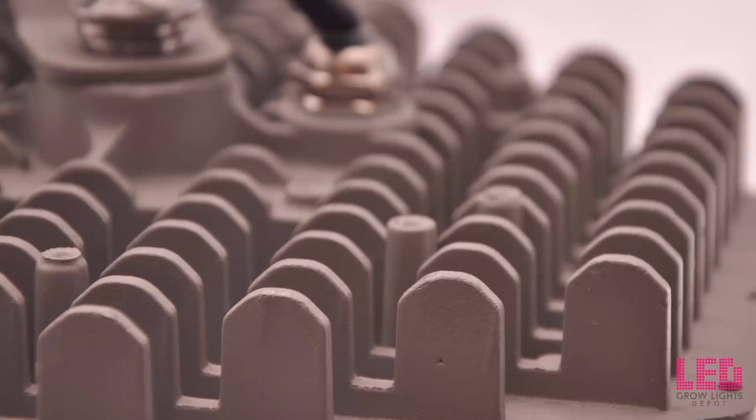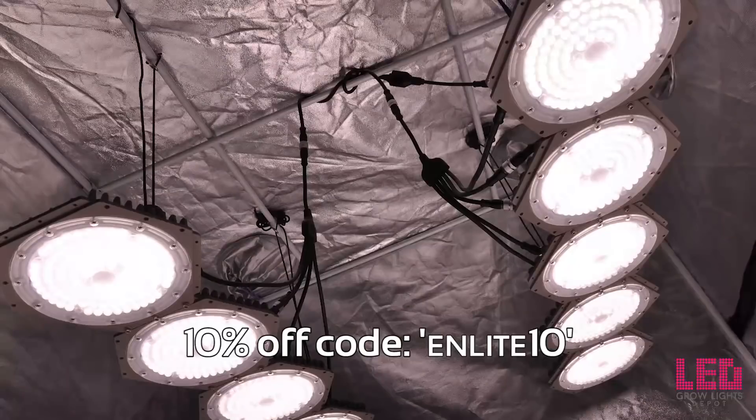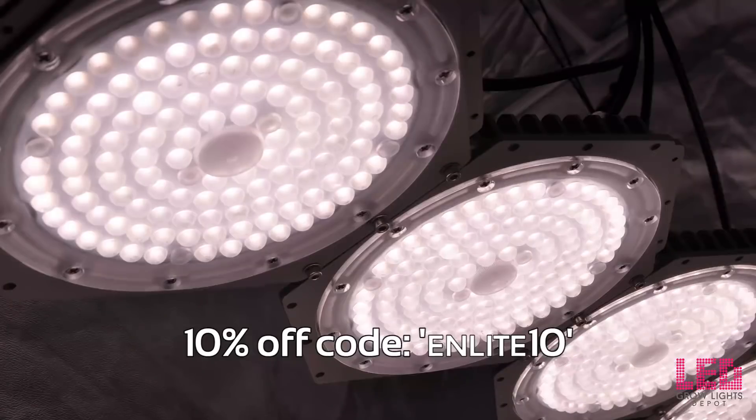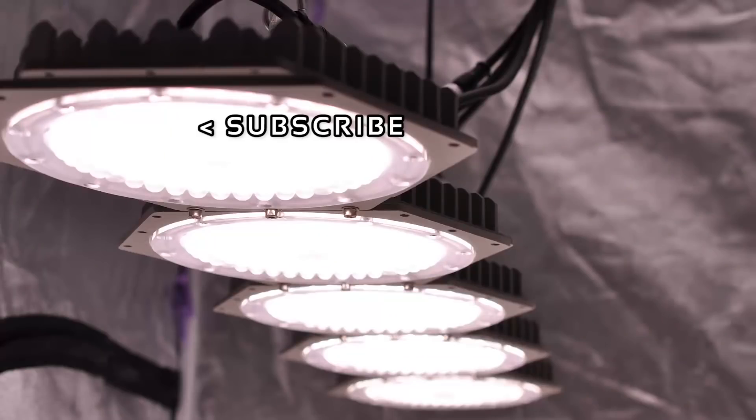The MSRP on the N-Light Sun Disc 600 watt is $960. However, you can use the code NLIGHT10 at checkout for an extra 10% off, bringing the price down to $864 plus free shipping in the lower 48 states and no tax. If you want to learn more or purchase the N-Light Sun Disc 600 watt LED grow light, click the link in the description.